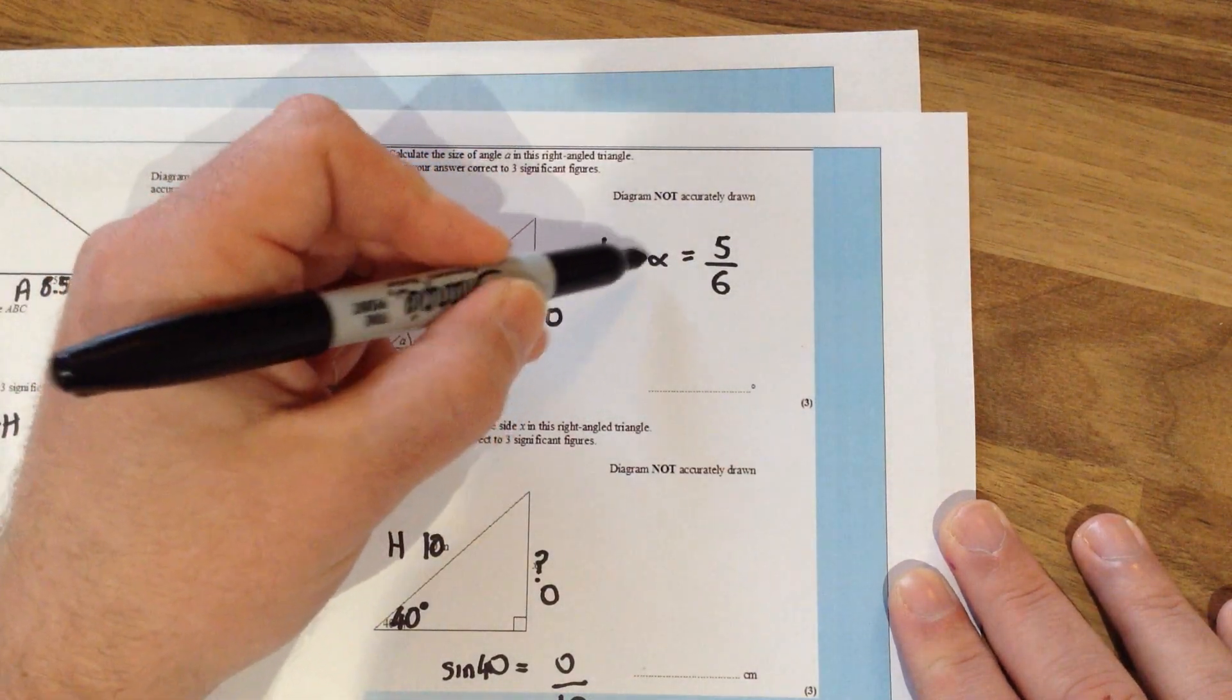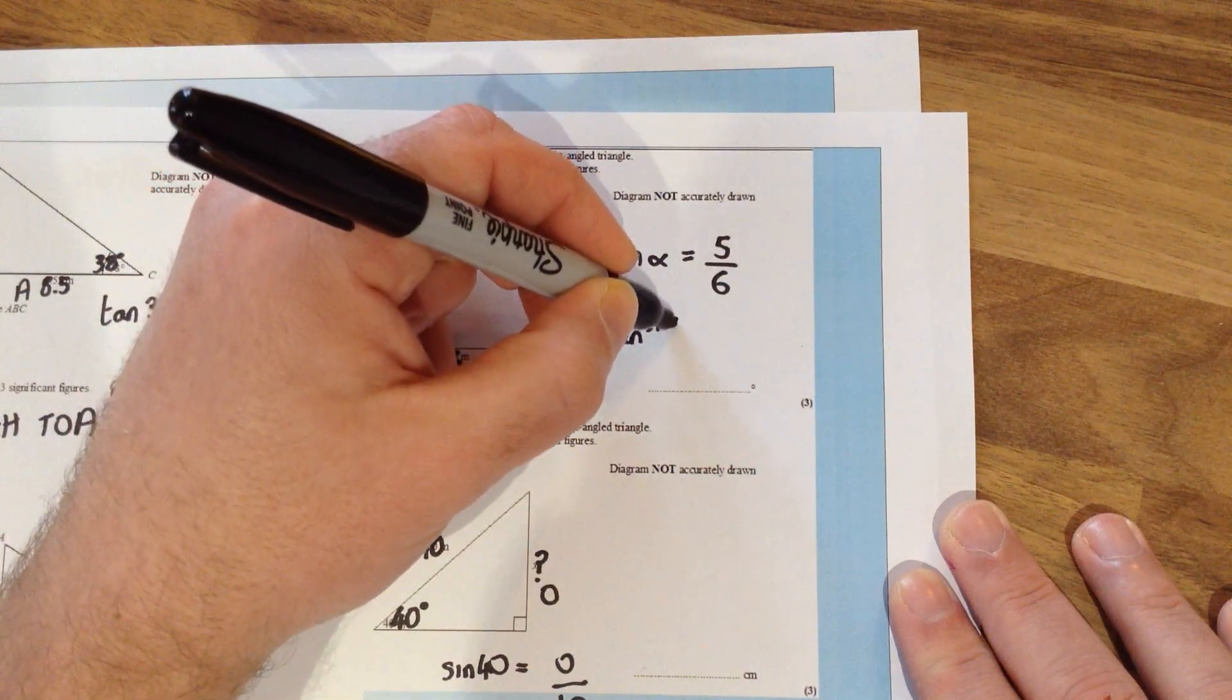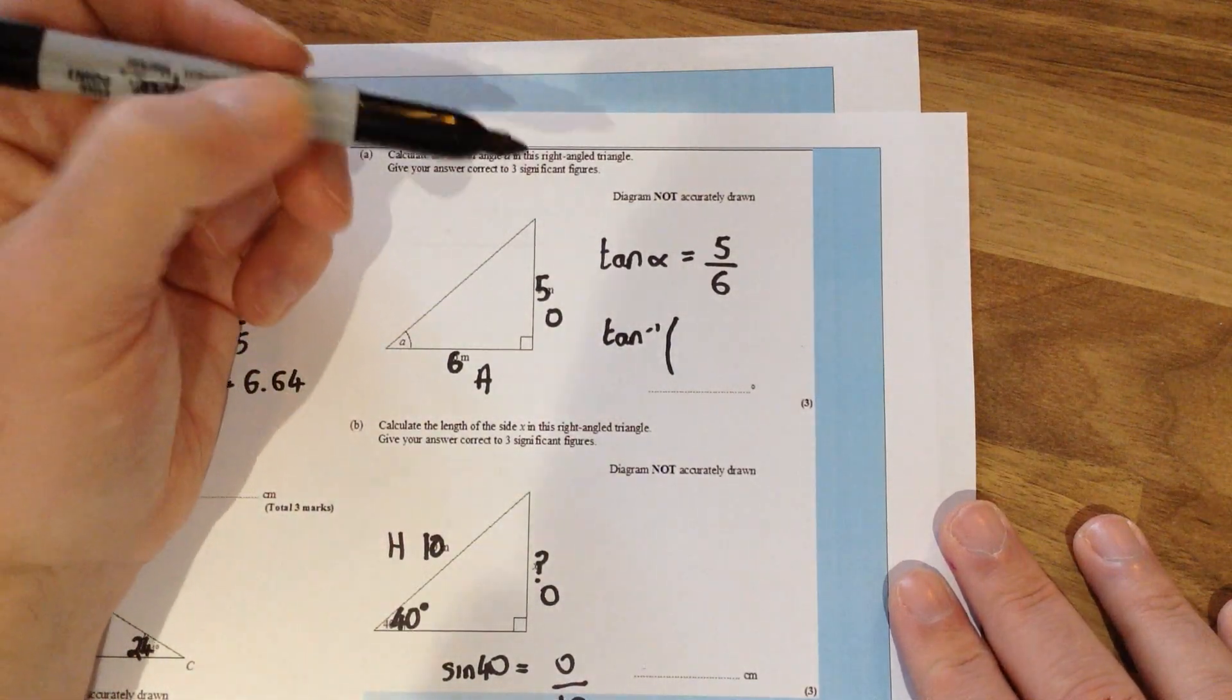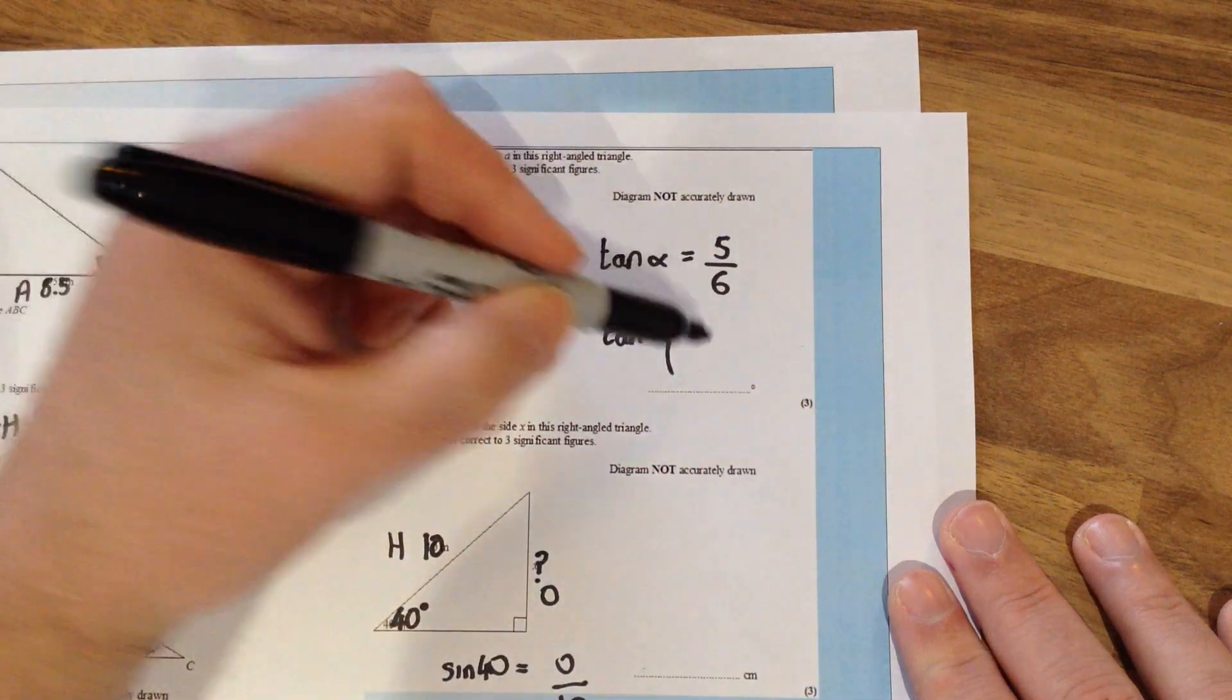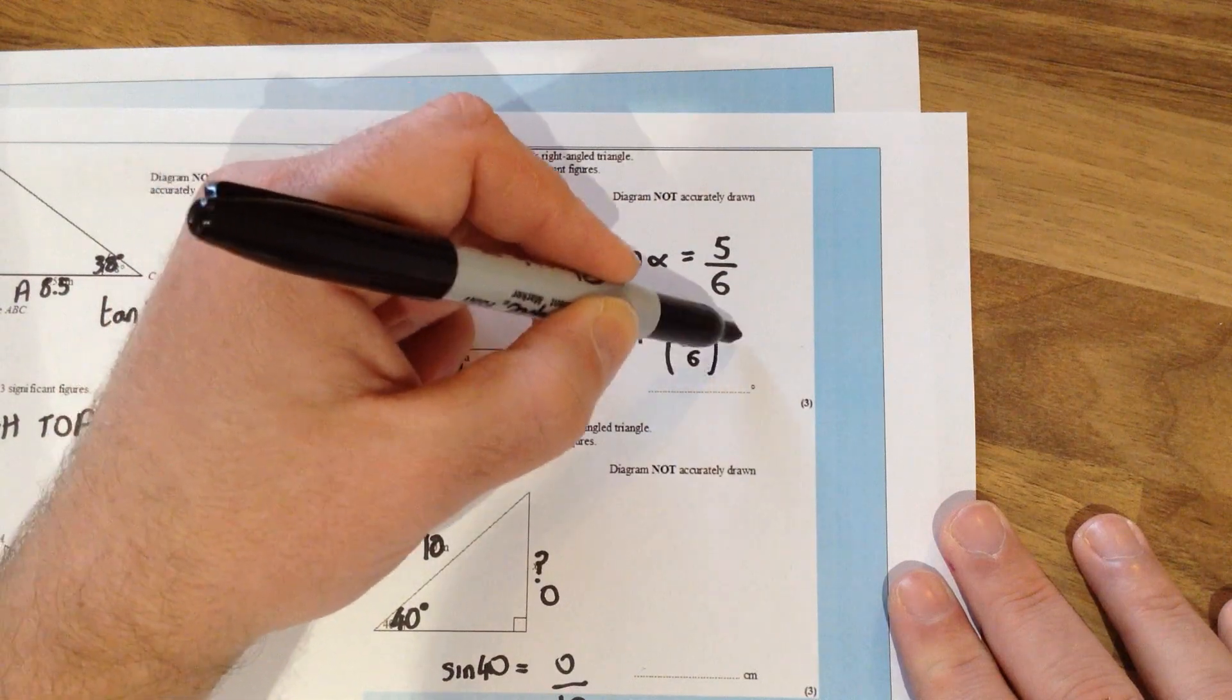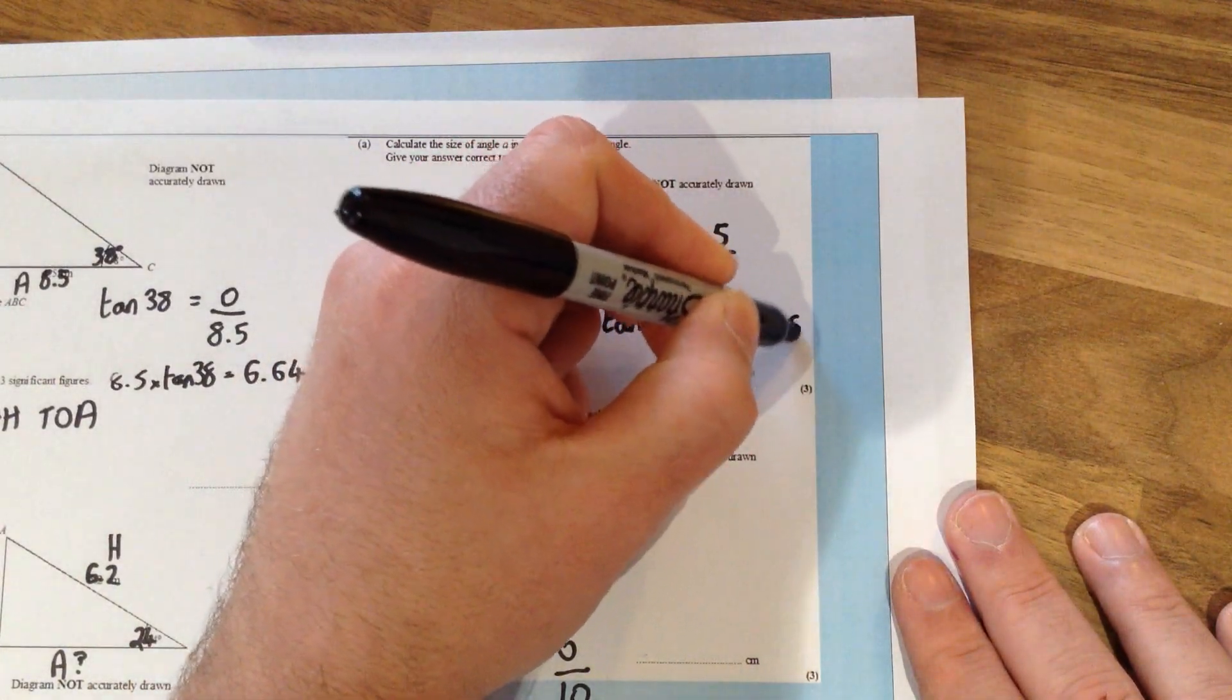In order to solve this one to find the angle we need to use tan to the minus 1. Basically it's the inverse, the opposite of tan. So if you press either shift or second function on your calculator and press tan you should notice that you'll get a little minus 1 just after the tan. And then in brackets we need to do 5 divided by 6, which again if you type into your calculators will give you an answer of 39.8 degrees.